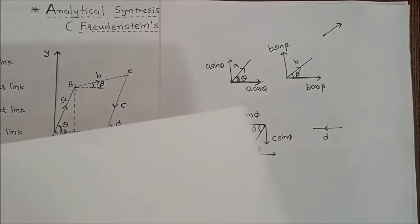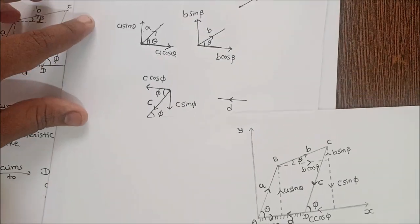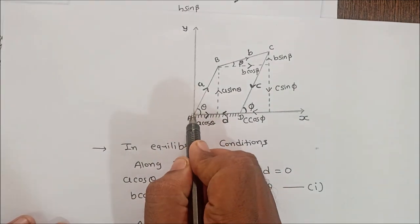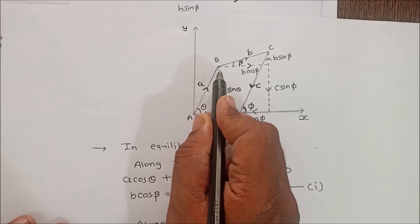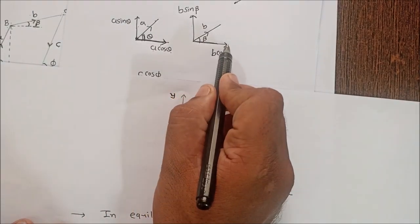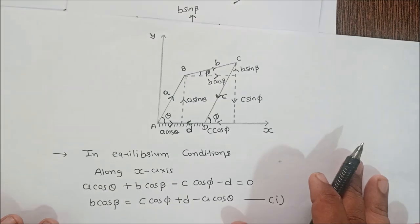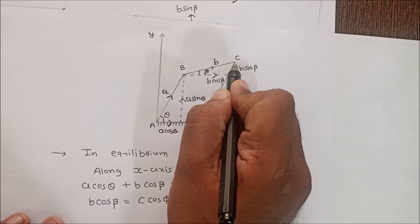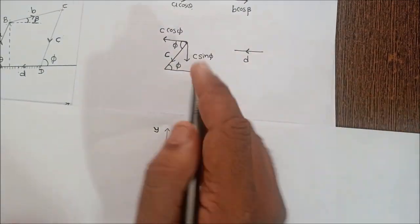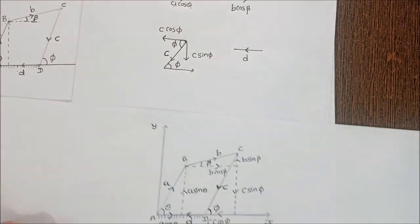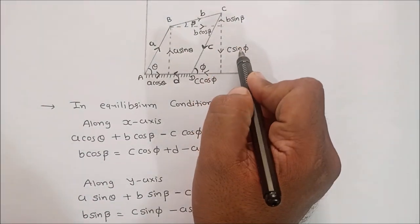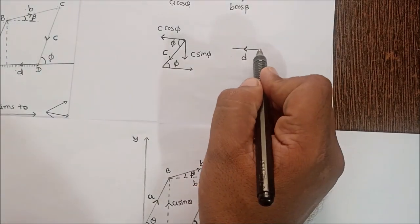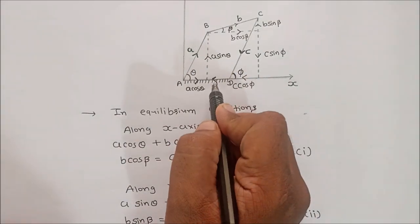We redraw the four-bar mechanism showing all components: A cos theta and A sin theta for link AB; B cos beta and B sin beta for link BC; C sin phi downward and C cos phi leftward for link CD; and vector D for the fixed link.